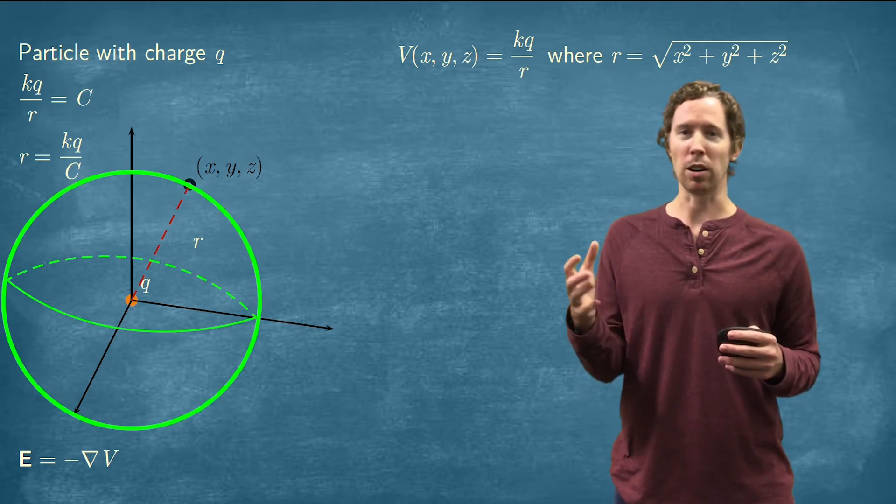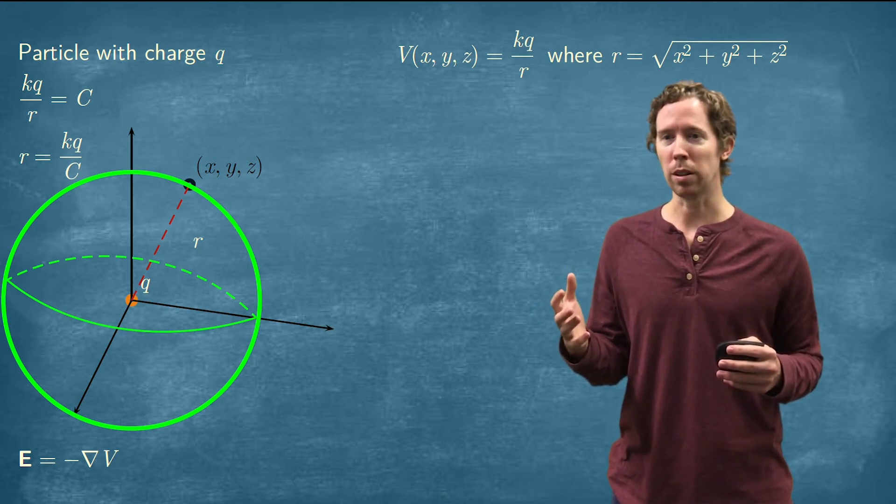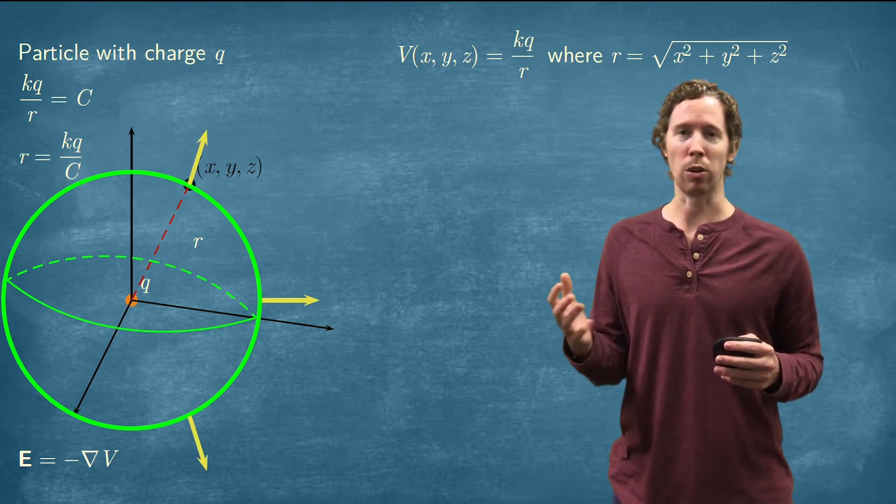We have these spheres that are level surfaces, and then the electric field is going to give us vectors that point directly away from that, that are normal to the sphere.